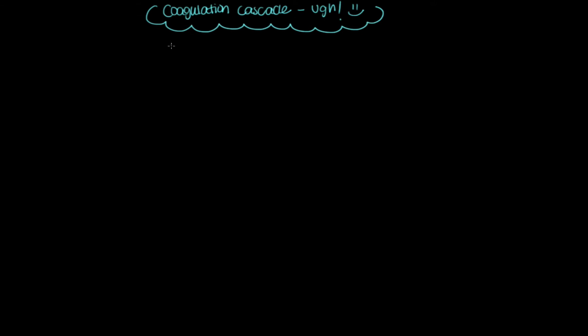When we talk about the coagulation cascade, what we're really talking about is how do we form a clot. When there's tissue damage, how do we form a clot to protect ourselves and stop the bleeding? That's what the coagulation cascade will break down.